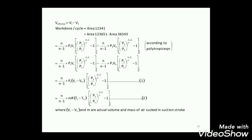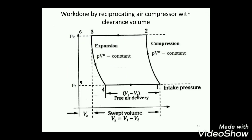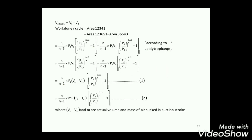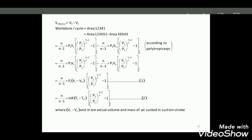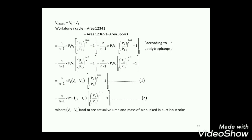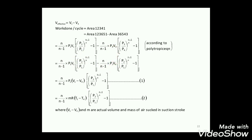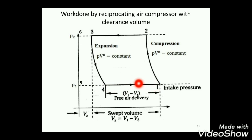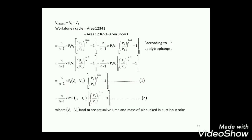The first question is P1 and V1. The second question is P4 and V4. Work done by the cycle — this is the question. If we have to solve the problem, P4 and V4: P4 is equal to P1. So P4 is equal to P1.